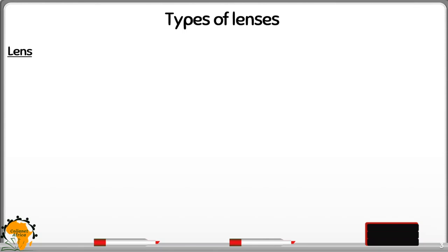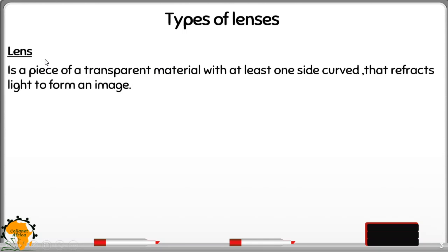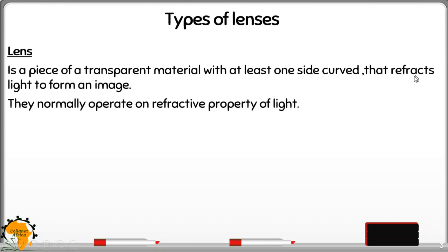Welcome to today's lesson. We are going to look at types of lenses. We start with the definition of the term lens, where we say that a lens is a transparent material with one side curved, and it uses the refraction of light to form an image. Refraction of light is the bending of light at the interface, where light traveling from one medium to another changes direction due to a change in velocity.